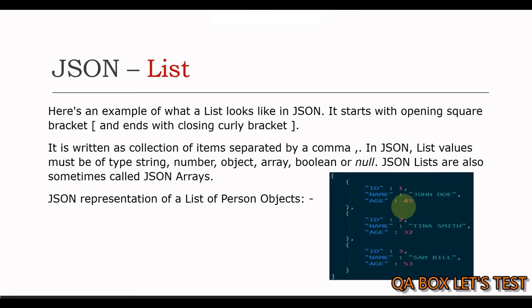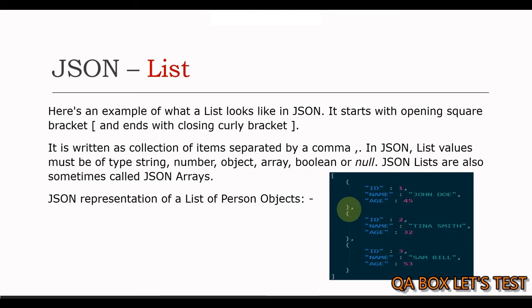Here is an example of what a list looks like in JSON. It starts with the opening square bracket and ends with the closing square bracket. It is written as a collection of items separated by comma. In JSON, list values must be of type string, number, object, array, boolean, or null. JSON lists are also sometimes called JSON arrays.